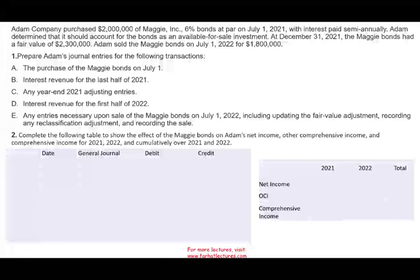Adam Company purchased $2 million shares worth of Maggie's 6% bond at par on July 1st, 2021. Interest is paid semi-annually. Adam determined that it should account for the bond as an available-for-sale investment. On December 31st, 2021, which is the end of the year, Maggie's bond had a fair value of $2.3 million — that's pretty good. Adam sold Maggie's bond on July 1st, 2022 for $1.8 million — it went down in value.